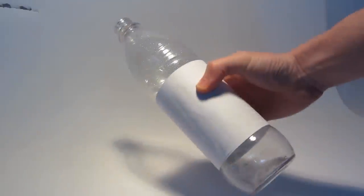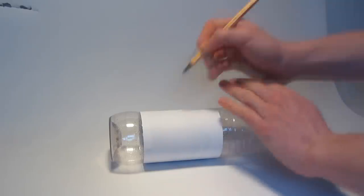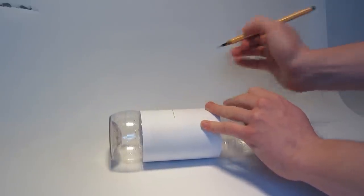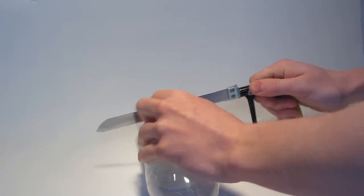In this video we are going to build a trip wire trap from an old water bottle. At first you need to mark the half of the bottle and then saw it apart.